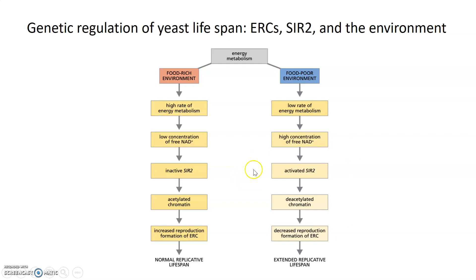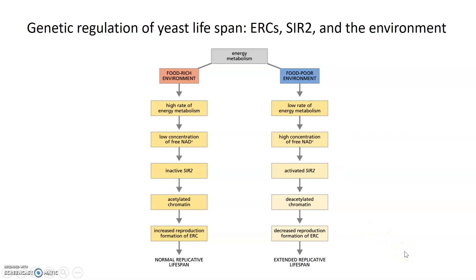Altogether, a food-poor environment can actually extend lifespan in yeast, which is interesting because we generally think more food means more growth and better lifespan. But in yeast, lifespan is measured in terms of number of replications. In a food-poor environment, replication slows down, and since yeast can only divide so many times, preventing it from dividing as quickly extends its lifespan. A slightly less nutritious environment extends yeast lifespan via the SIR2 and ERC pathway.